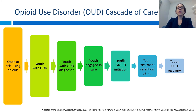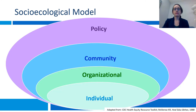Another helpful framework is the opioid use disorder cascade of care, adapted from the HIV cascade of care. This is where we think about how to bring youth with opioid use disorder through diagnosis, engagement in care, initiation of medications, and ultimately towards recovery. I also think the socio-ecological model is helpful for thinking about the level of intervention — whether it's individual-focused, organizational, community, or a policy intervention that can have wide-reaching impacts.